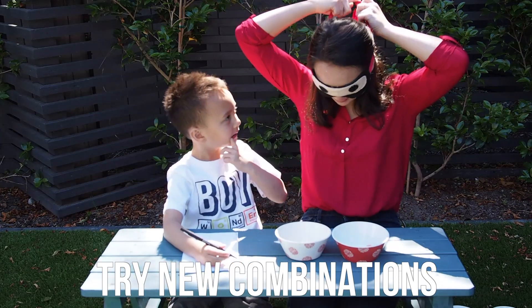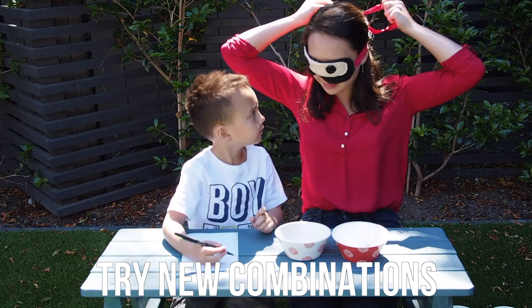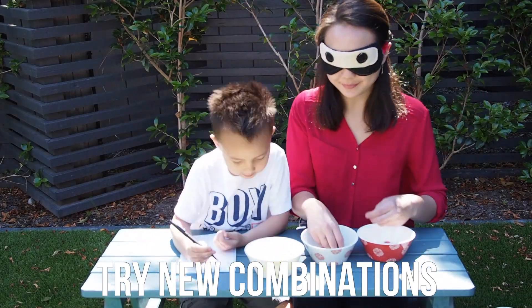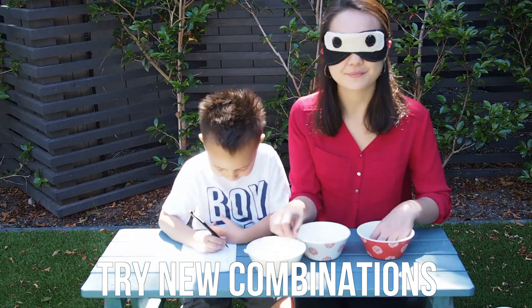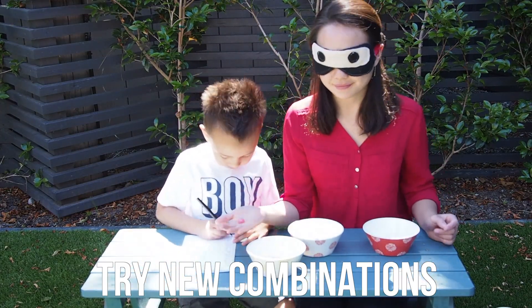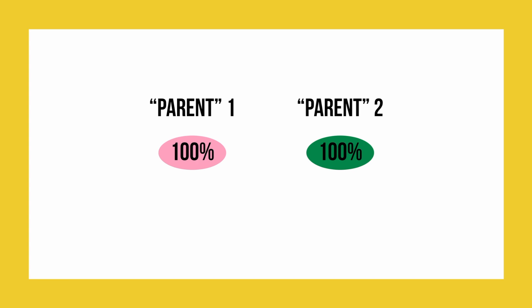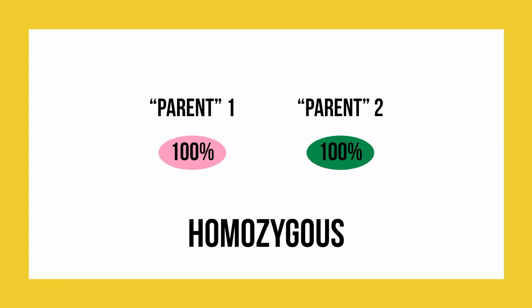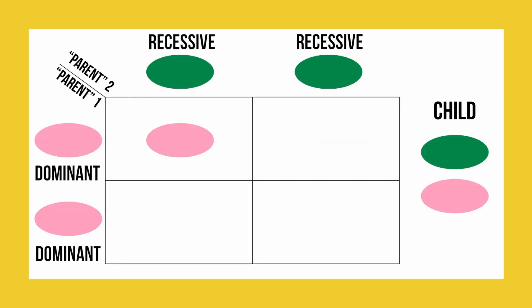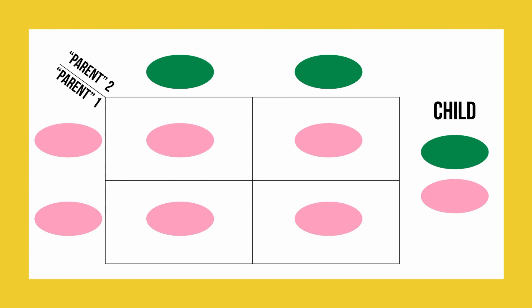Now that you know how to determine the probability of a child inheriting a gene, you can try this with new combinations. We've repeated this experiment, this time using one bowl with only pink jellybeans and one bowl with only green jellybeans. When each parent has 100% of only one gene type, they are known as homozygous. Now let's see what the probability looks like in the Punnett square. Just like before, we've set up our Punnett square and are filling it in using our rules. This time, all four squares are a pink plus green combination, and as we know, this results in a pink gene. In this situation, the child has a 0% chance of inheriting the green gene, but a 100% chance of inheriting the pink gene.